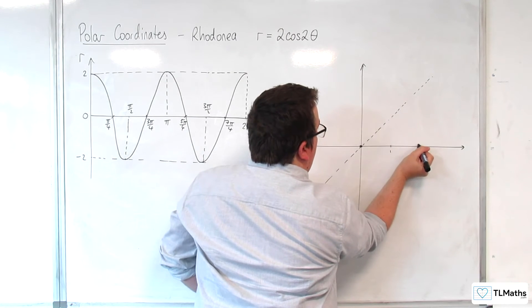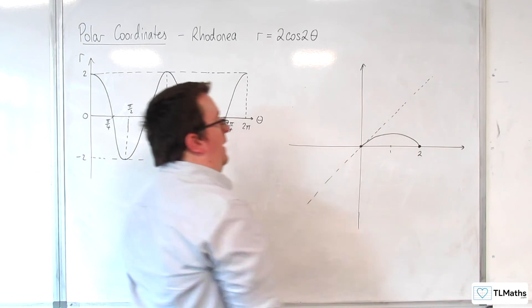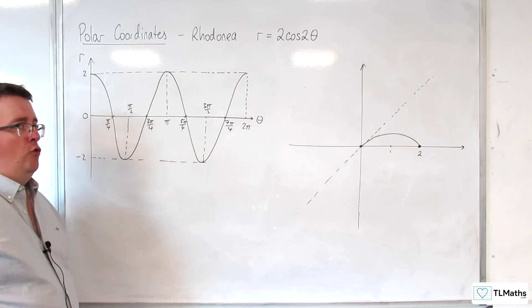So, the curve must come in like so, like that. So it's coming in at that pi over 4 angle.